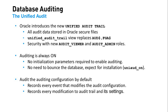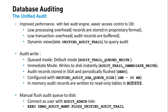Moving ahead to the performance side — as mentioned, auditing can be a costly affair. In Oracle 12c, performance has been improved using the unified audit trail mechanism, which records audit records in a proprietary format that is accessible directly from the unified audit trail view.